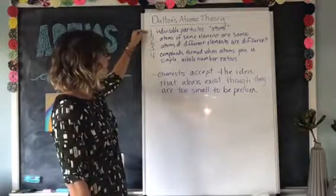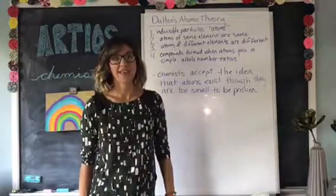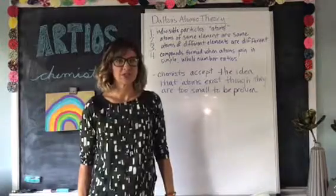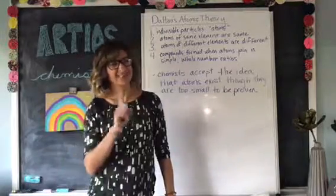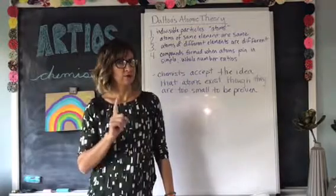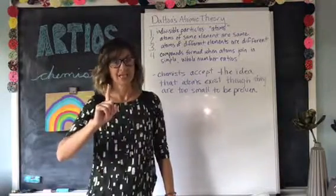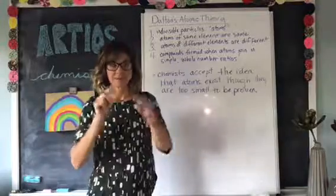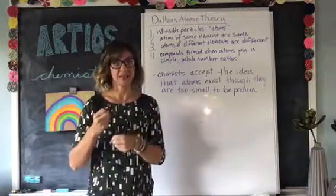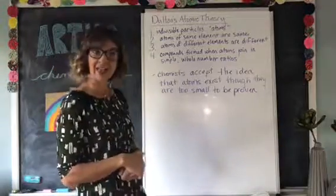Number one: all matter is made of indivisible particles called atoms. So way back in ancient Greece when Democritus said he didn't think the continuous theory of matter was correct, he proposed the discontinuous theory of matter — and he was right. Matter is made up of tiny little particles, and we call those indivisible particles atoms.